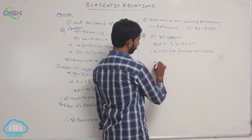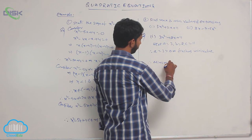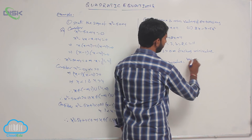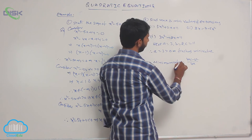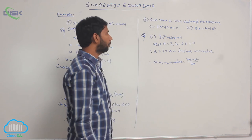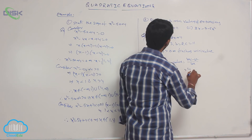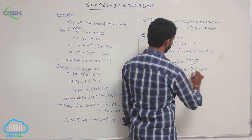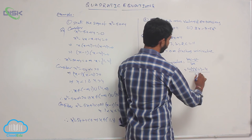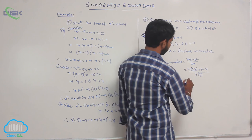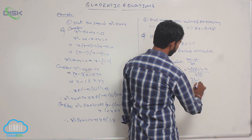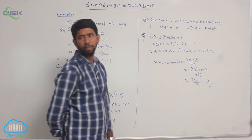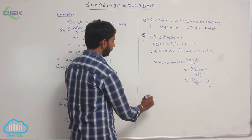Therefore the minimum value is equal to (4ac - b²) / 4a. Substituting a = 3, c = 11, b = 2: that is (4 × 3 × 11 - 4) / (4 × 3). The 4 in the numerator and denominator cancel, giving (33 - 1) / 3 = 32/3. The minimum value is 32/3.